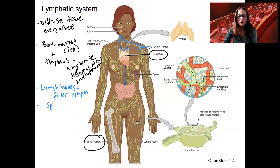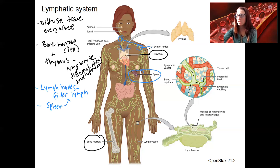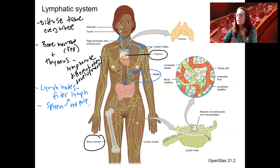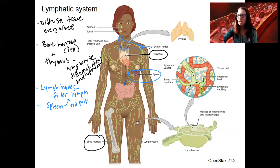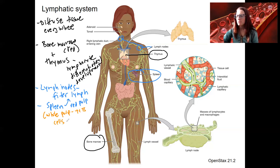The spleen also filters the lymph as one of its main functions. Spleen is right here — you've seen that in the rat. The red pulp of the spleen is mostly what filters the lymph. There's also a white pulp in the spleen where immune cells are mounted — so T and B cells, adaptive immunity occurs. There's white pulp where T and B cells are activated.